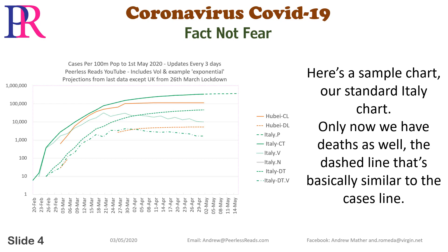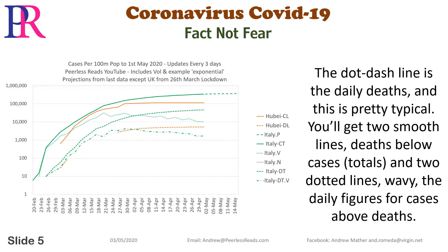Here's a sample chart — our standard chart — Italy. Only now we have deaths as well. The dashed line is basically similar to the cases line. The dot-dash line is the daily deaths, and this is pretty typical. You'll get two smooth lines: deaths below cases in totals, and two dotted wavy lines — the daily figures for cases above deaths.